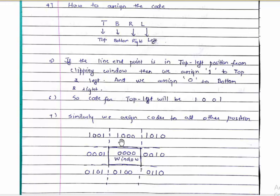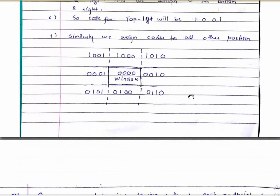For a point inside the window, it's neither on top nor below nor on the left or right, so its region code will be 0000. This is how we assign all nine area codes to positions based on the clipping window.